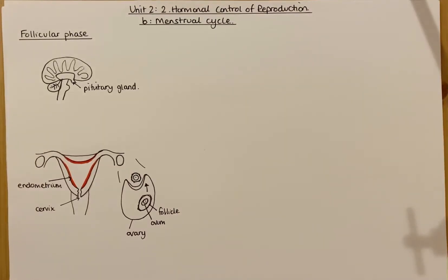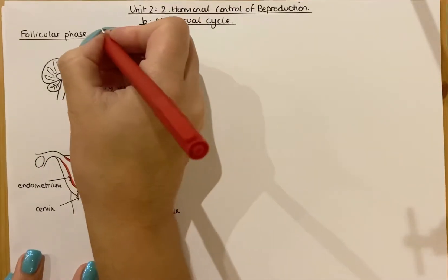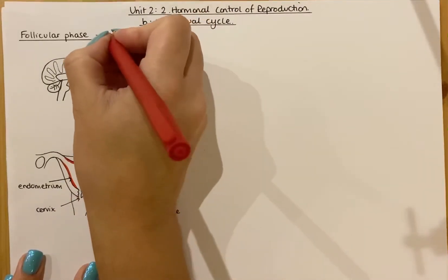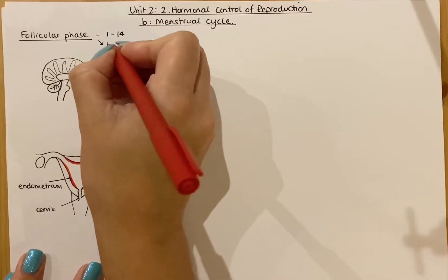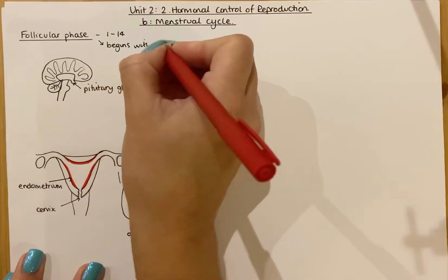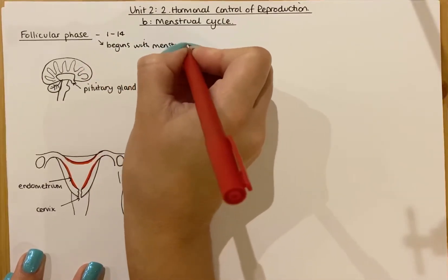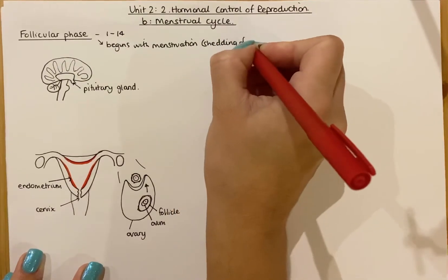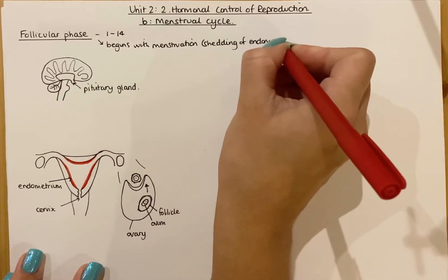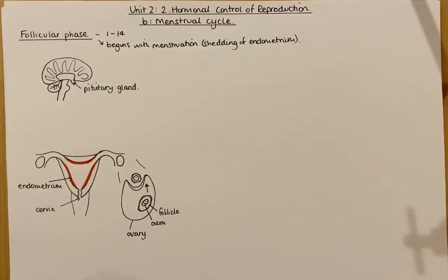This video covers Unit 2 in physiology and health, particularly the reproductive system section of the Higher Human course. This is mainly going to cover the female hormonal control of the menstrual cycle. There are two phases to the menstrual cycle in females. The first phase is the follicular phase, which lasts from day 1 to day 14. The follicular phase begins with the process of menstruation, which is the shedding of the endometrium lining, lost out of the vagina. The endometrium is the lining of the womb and it is where the embryo, following fertilization, will implant.